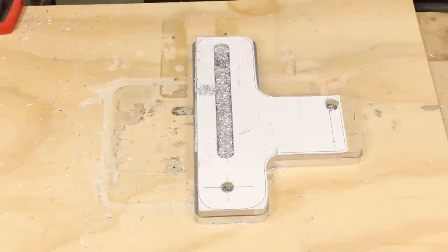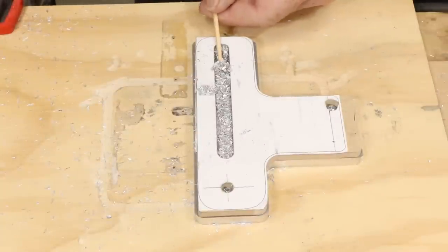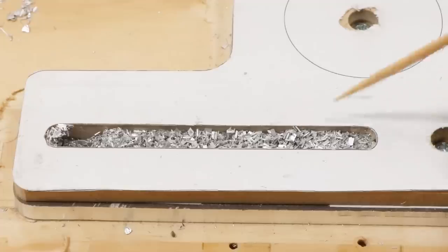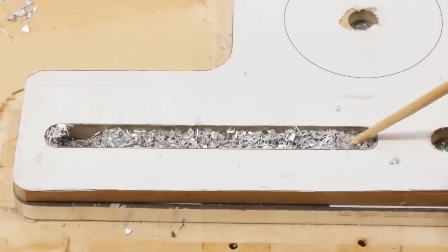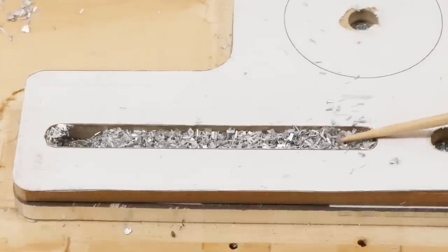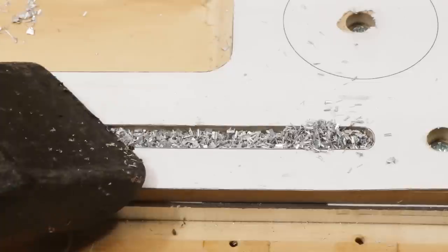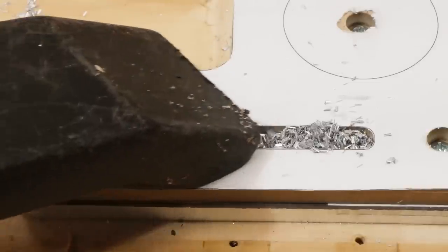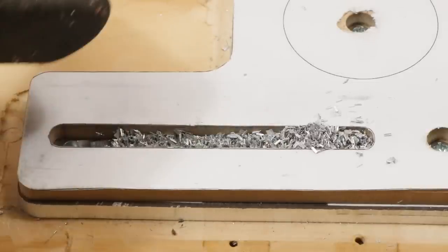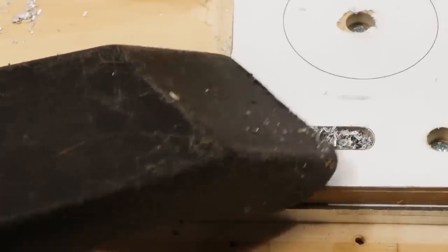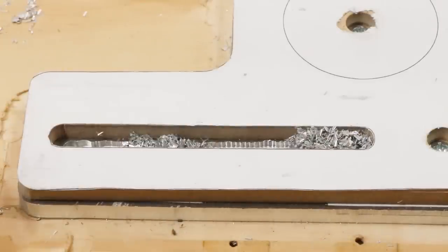Notice also that when the bit is buried in the slot, the chips pack into the slot very tightly. You typically cannot vacuum them out without first prying them loose. Stop after every pass, dig out the chips, and check the tightness of the collet and any other threaded fasteners like the bushing.